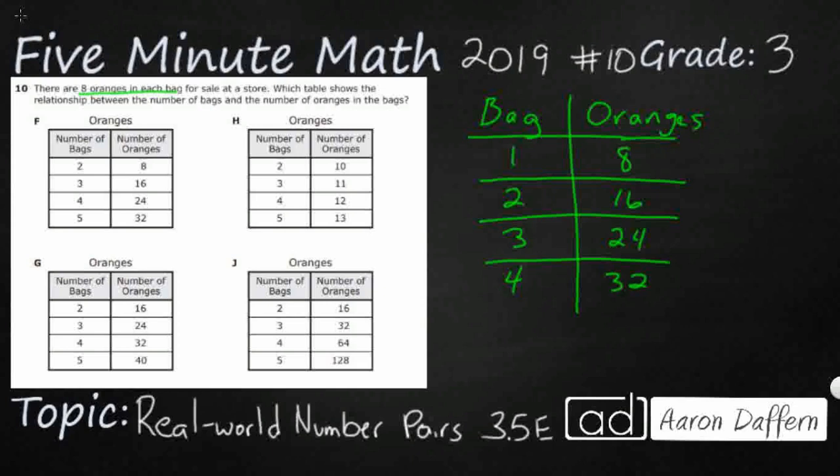So I'm putting groups of eight together. And so on the left side of my table, all I'm doing is just going by ones, but then on the right side of the table, I am skip counting by eight.